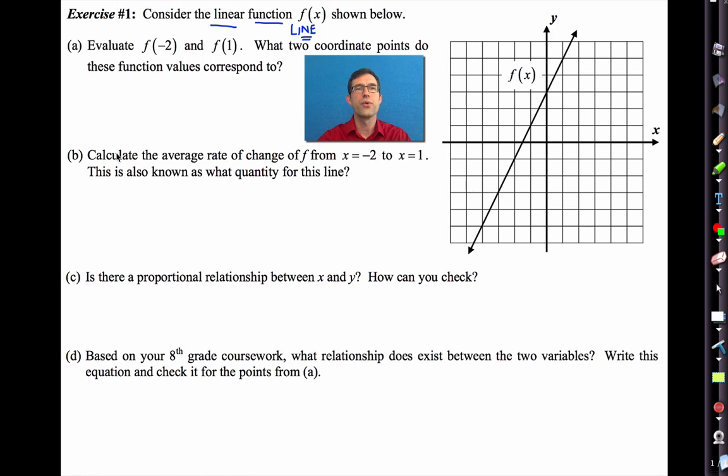All right, let's go through it. Remember, the negative two and the one are x-coordinates. So if I go to x equals negative two, y is equal to negative one. So f of negative two is equal to negative one. That corresponds to the point negative two comma negative one. On the other hand, if I go to x equals one, I find that y is five. So f of one is equal to five. One comma five.